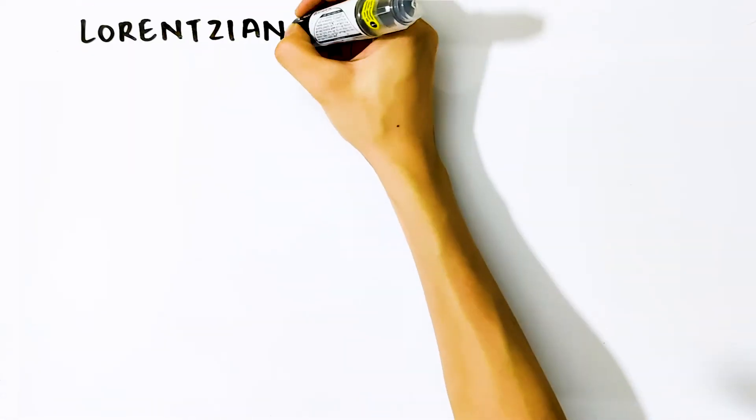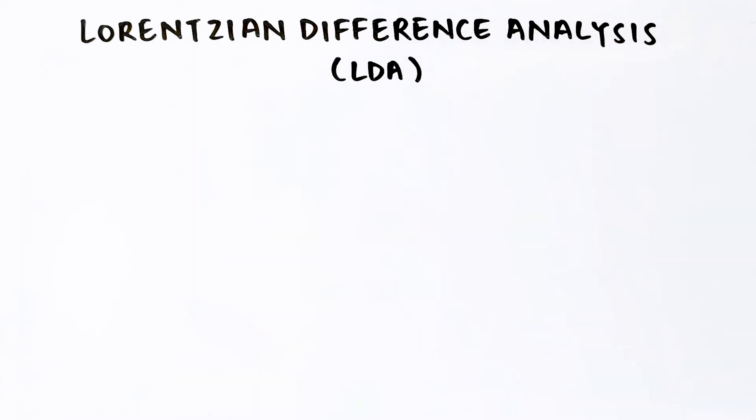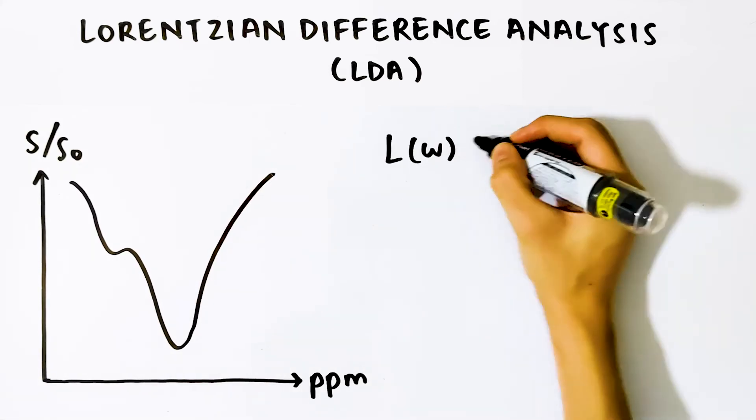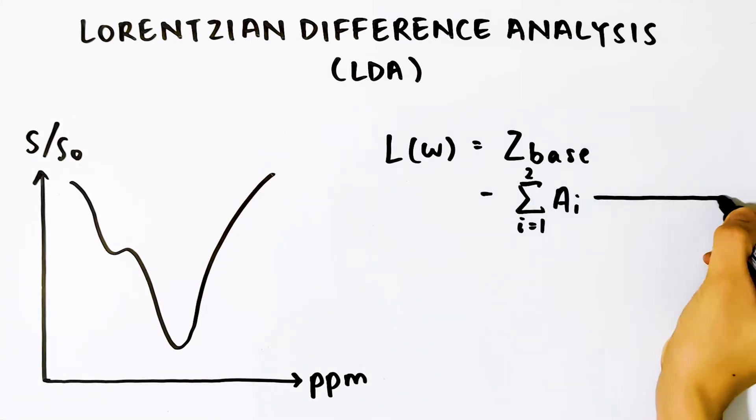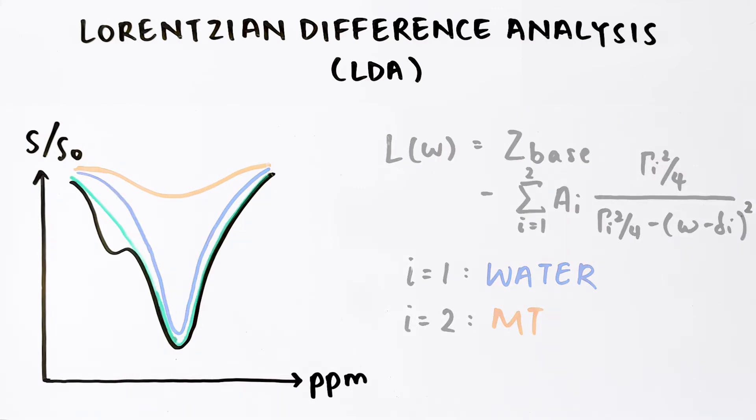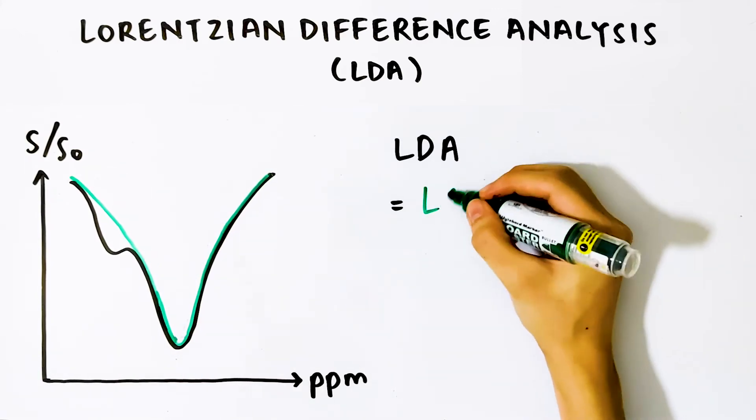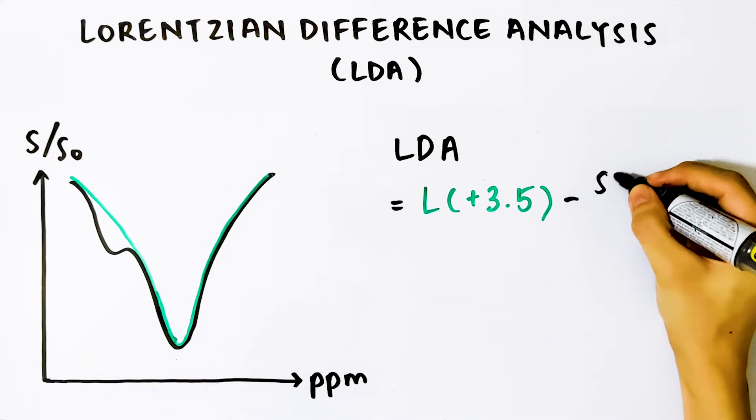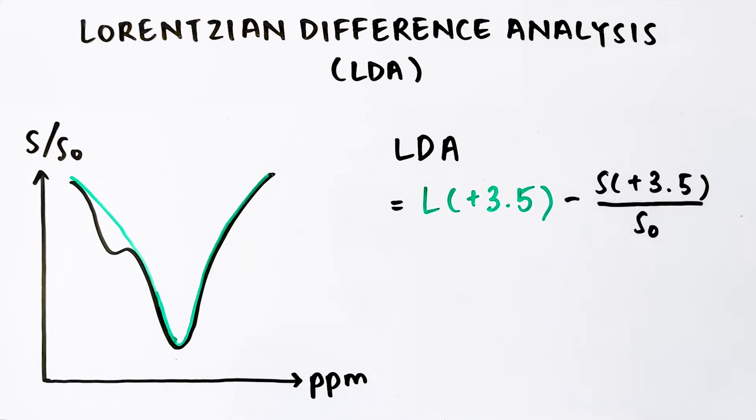The Lorentzian Difference Analysis, or LDA, is a Lorentzian line-shape model-based quantification method. To perform LDA, first, fit the normalized Z-spectrum using a two-pool Lorentzian line-shape model. The two pools here are water and MT respectively. Then, calculate the difference between the fitted Lorentzian line-shape and the experimentally measured Z-spectrum at 3.5 parts per million. This removes the water spillover and MT effects from the quantified APT effect.